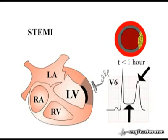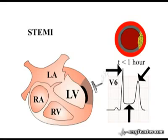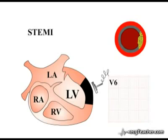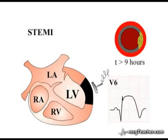Peaked T waves, ST segment elevation, and alterations to the terminal portion of the QRS complex are the early changes of acute myocardial infarction secondary to complete occlusion of a coronary arterial vessel. If these early ECG changes are recognized and the vessel reopened using either thrombolysis or direct coronary angioplasty, the progression of infarction can be halted and myocardium at risk salvaged. If left untreated, the full thickness of the region supplied by the occluded vessel may die, associated with a poorer outcome and an ECG phenomenon developing 9 to 12 hours after occlusion or in the days following infarction.